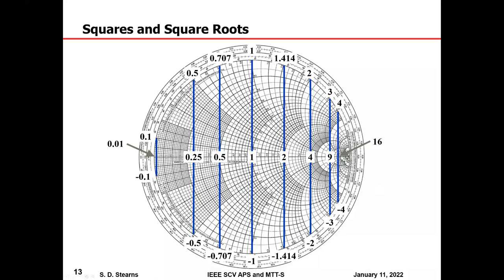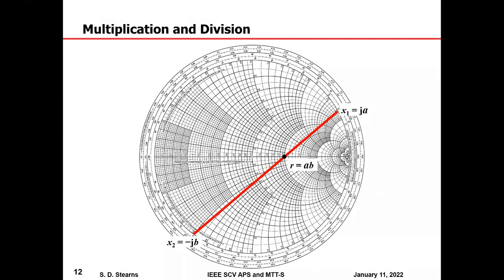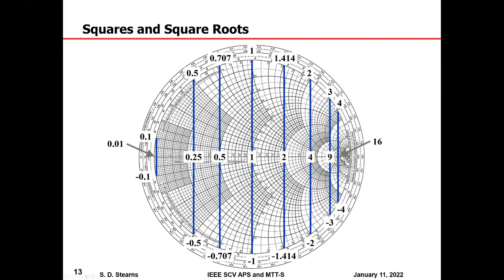You can also do division: put the divisor on the bottom number line, the dividend on the middle number line, and read the quotient from the upper number line. Because you can do multiplication and division, you can do square roots and squares. To square a number, put it on the upper or lower number line and drop a perpendicular to read the square on the horizontal number line. To take a square root, enter on the horizontal number line, erect a vertical to the boundary, and read off the square root on the upper or lower number line.